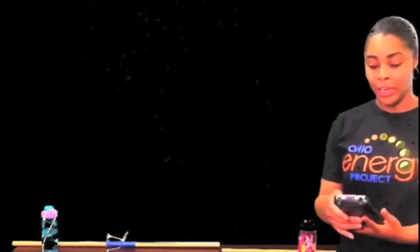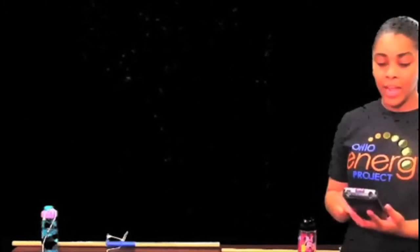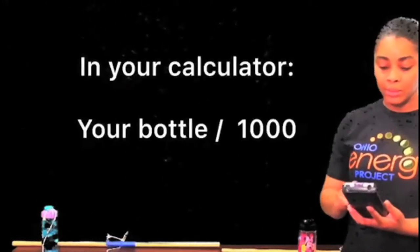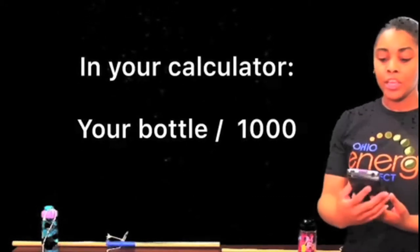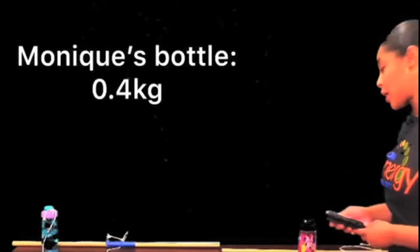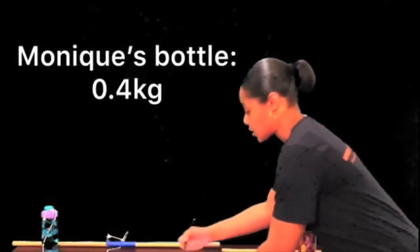The scale is reading 357.1 grams, but before we write it down in our chart we have to convert it into kilograms. So divide that by a thousand. Take your calculator and divide 357.1 by a thousand. You should get something that says 0.35, but we're going to round and say 0.4 kilograms. So let's write that.